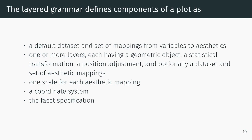The layered grammar defines the components of a plot as a default data set and set of mappings from variables to aesthetics. Number two is one or more layers. Each layer has a geom, a stat. By the way, Wickham uses the term geom for geometric object and stat for statistical transformation.